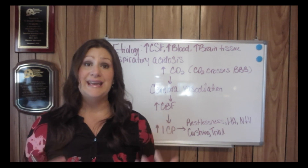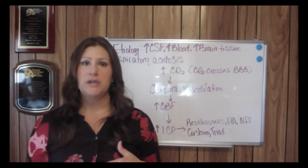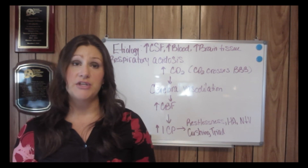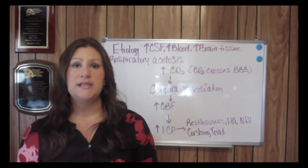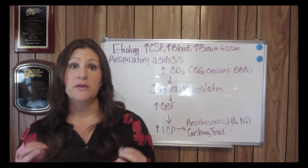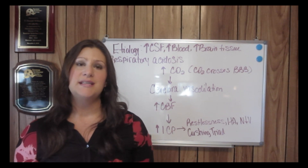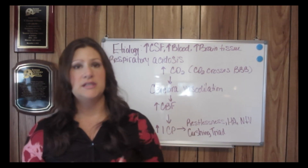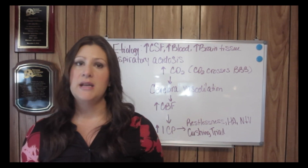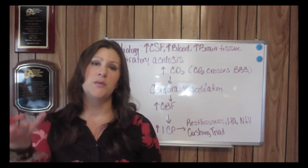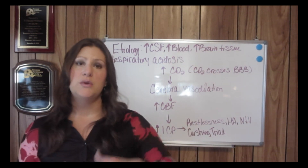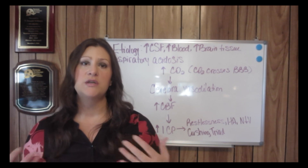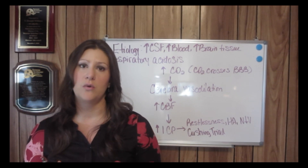Why do we see bradycardia? The increase in systolic blood pressure increases cerebral blood flow even further. The baroreceptors in the brain and the carotid arch sense the pressure change resulting from the increased systolic blood pressure, and they set off a series of reactions to slow the heart rate down as an immediate response to that increase in pressure. So you have increased systolic blood pressure, widened pulse pressure, and bradycardia because the baroreceptors sense increased pressure and trigger reactions to slow the heart rate.